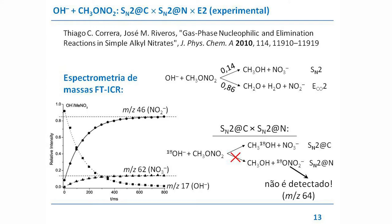Depois de um certo tempo, o sinal da hidroxila vai a zero — a reação se completa. O sinal do nitrito sobe até cerca de 0,86, e o do nitrato sobe até cerca de 0,14 (14%). A gente pode estimar então que a seletividade dessa reação é 14% para SN2 e 86% para a reação de eliminação seguida de dissociação.